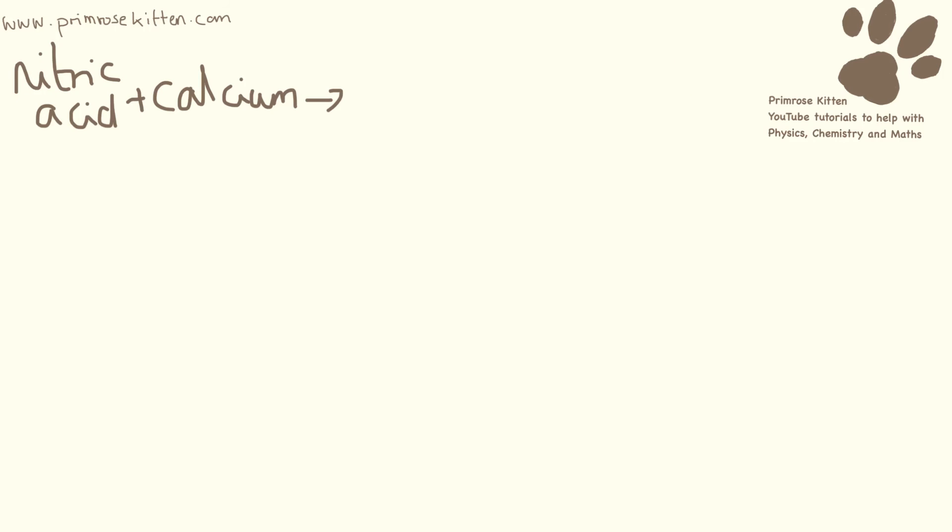Nitric acid and calcium. Again, we're going to have salt and hydrogen produced. The salt, the name starts with the metal, calcium. And because it's nitric acid, it's going to be a metal nitrate and hydrogen produced.